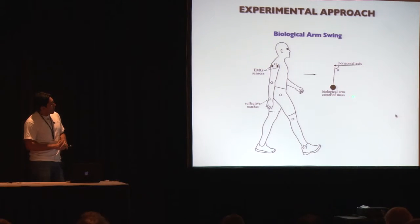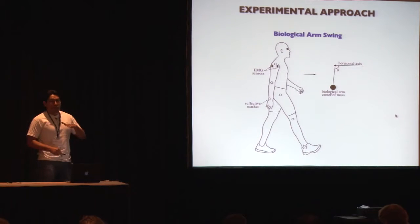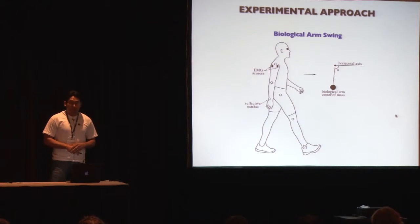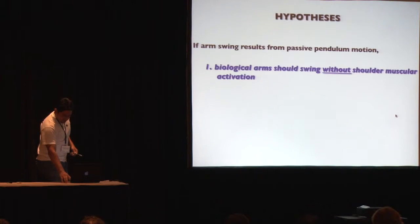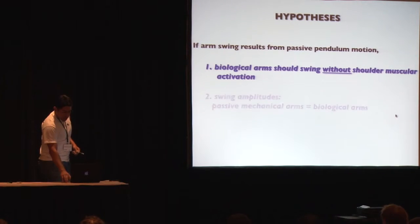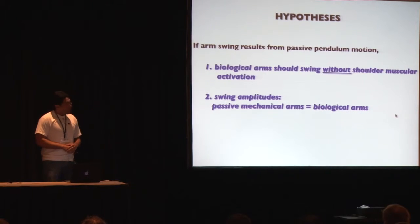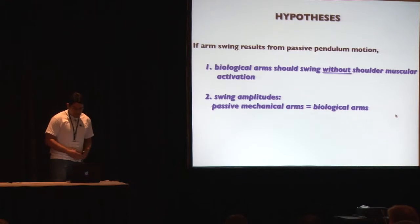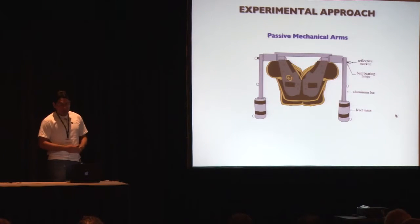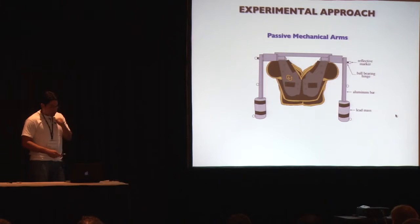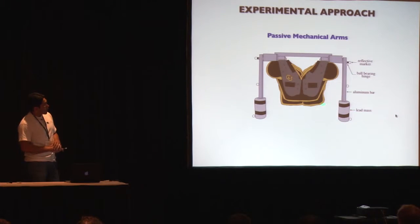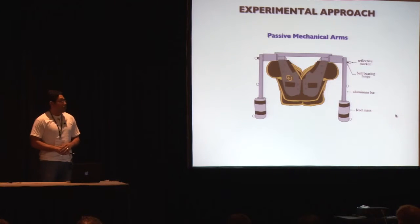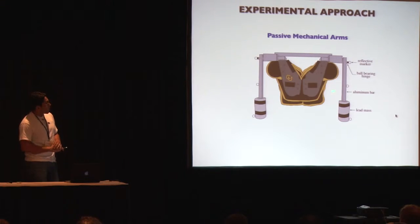We took the marker data and estimated the position of the biological arm's center of mass relative to a reference horizontal axis. Secondly, we hypothesized that if arm swing motion results from passive dynamics, then the swing amplitude of anthropomorphic mechanical arms should match that of biological arms. We took a similar approach to Collins from 2009 and built passive mechanical arms with similar inertial characteristics as each subject's biological arm, attaching a mass at the end of a bar and adjusting its position relative to the pivot point.